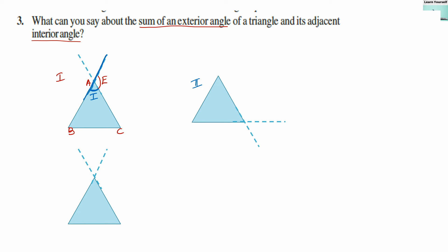Let us check with the second figure also. If we take this exterior angle and its adjacent interior angle, these two angles are also formed on a straight line, making a linear pair, so their sum is also equal to 180 degrees. Similarly, in the third case, this exterior angle and its adjacent interior angle also add up to 180 degrees.